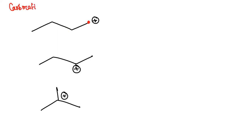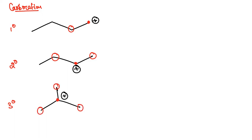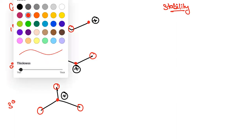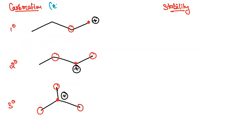We call it primary carbocation — a carbocation in which carbon has a positive charge. After that, when they are connected to three different alkyl groups, we are talking about primary, secondary, and tertiary carbocations and their stability. The carbocations are called electron-deficient centers — the place where electrons are low.